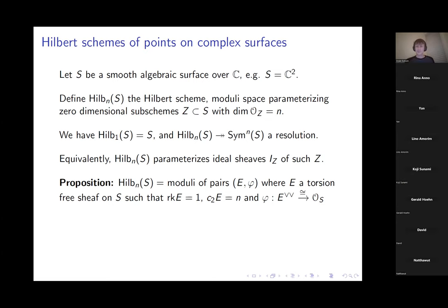Torsion-free sheaves have a canonical map to their double dual, which is locally free up to codimension three. On a smooth surface, E^{∨∨} will always be a vector bundle, whose rank is called the rank of E. When we ask for the trivialization φ, we're just saying the double dual can't be some more interesting line bundle.